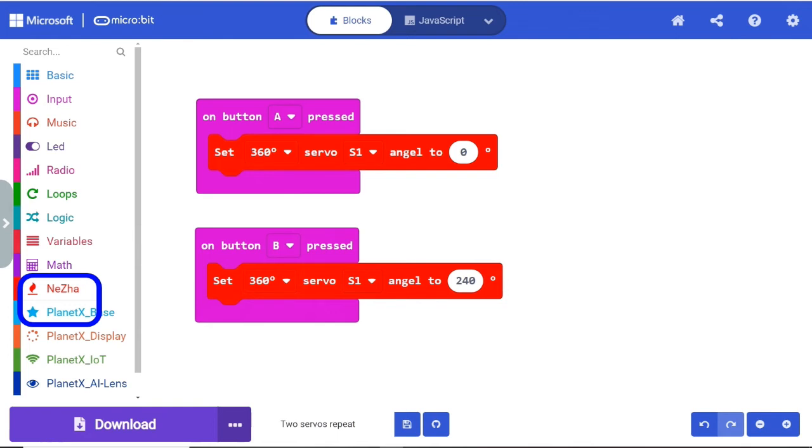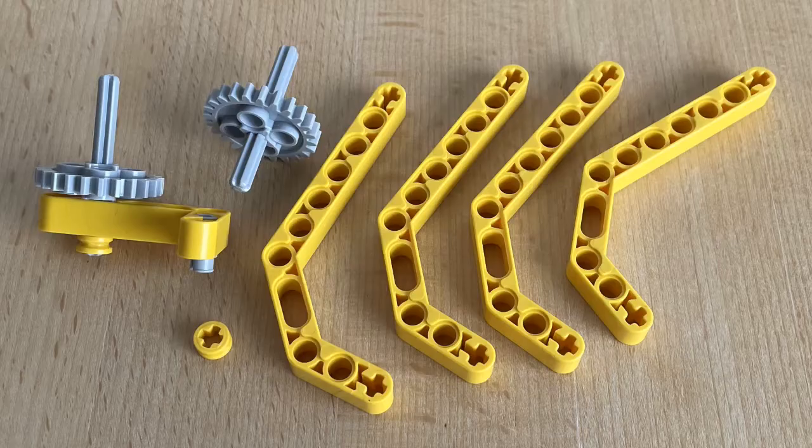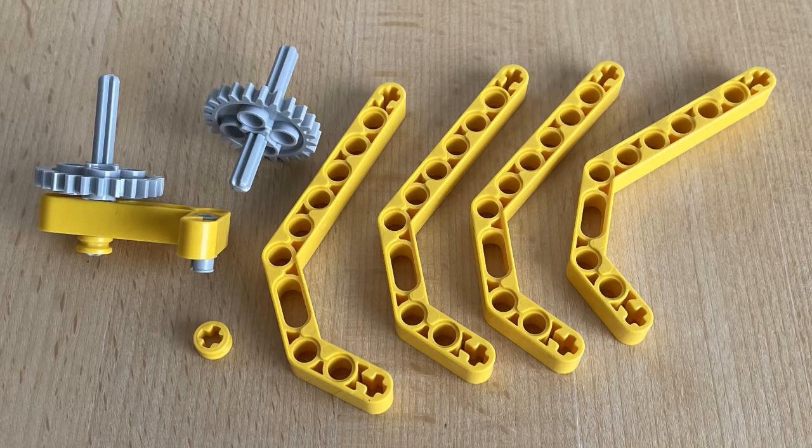First you need to download the Netza and Planet X extensions. The grab claw can be built as shown here.